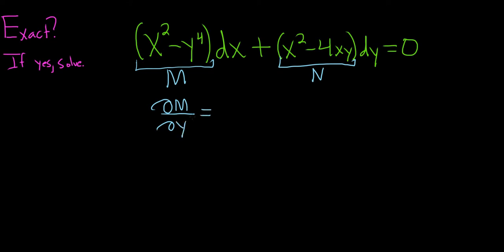So when you're computing del M, del Y, you treat all of the X's as constants. So the derivative of X squared in this case is 0, and here we'll get minus 4Y cubed.